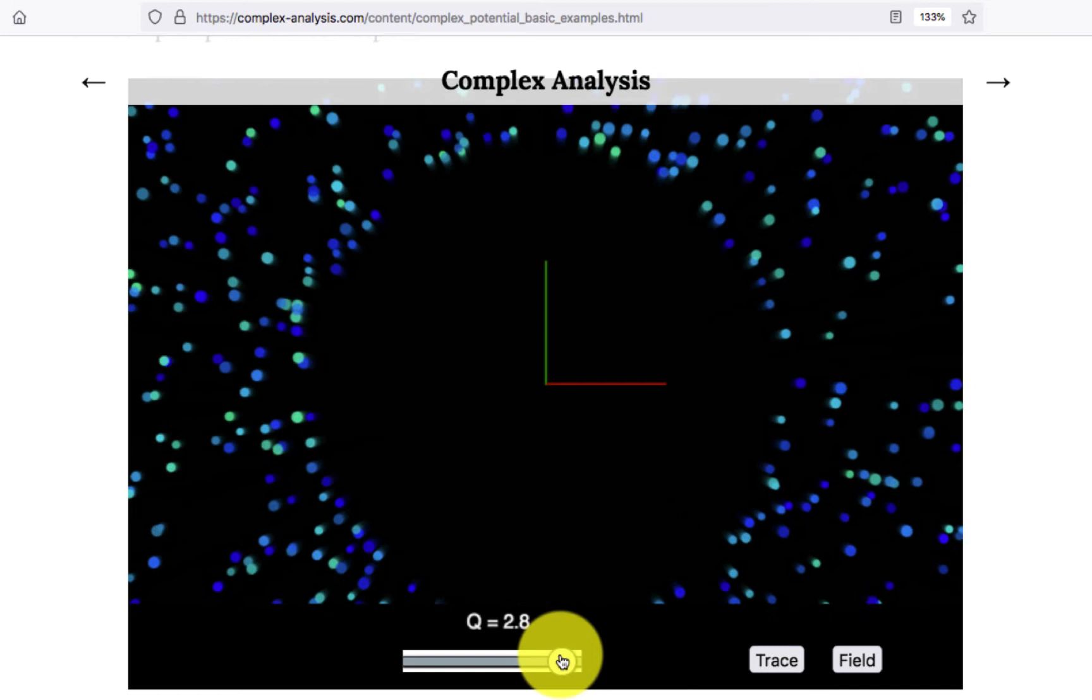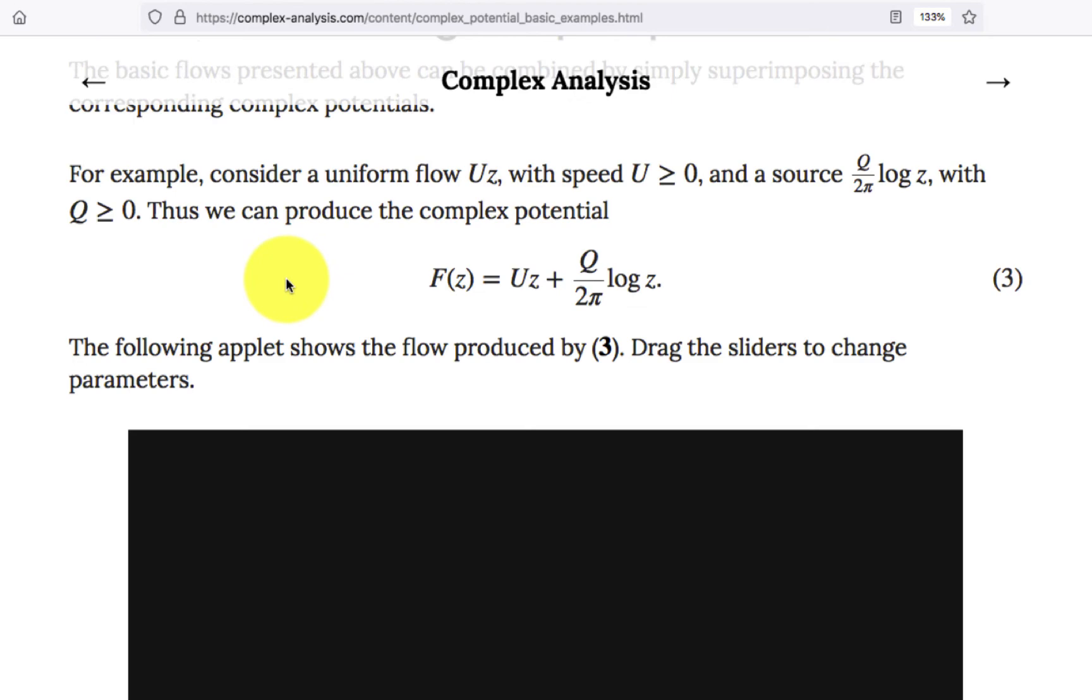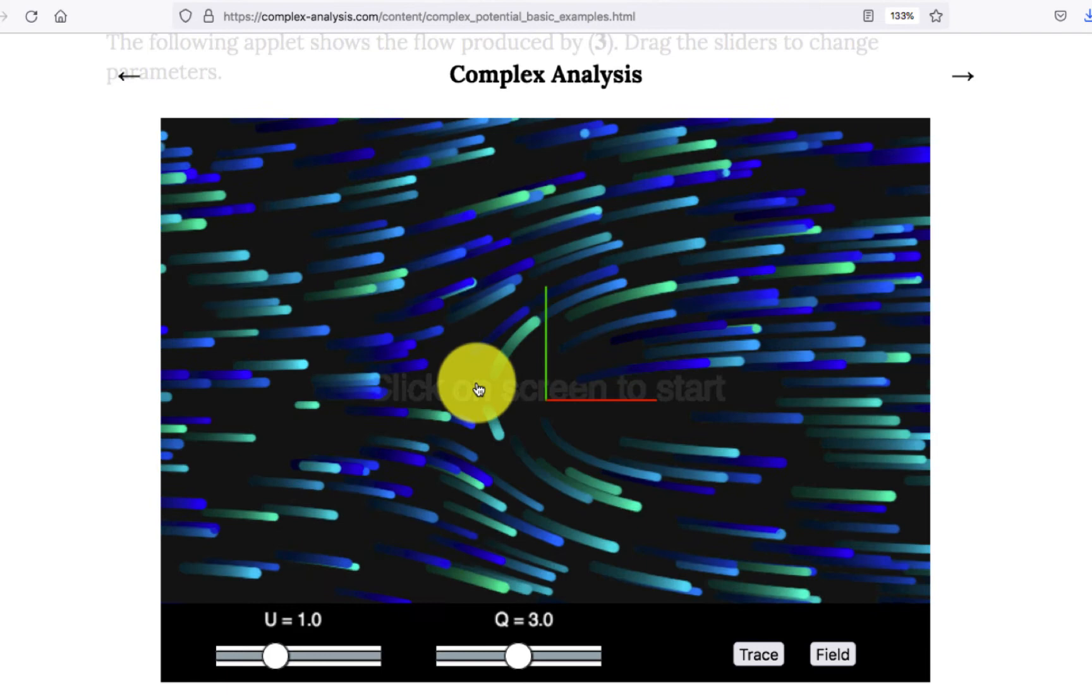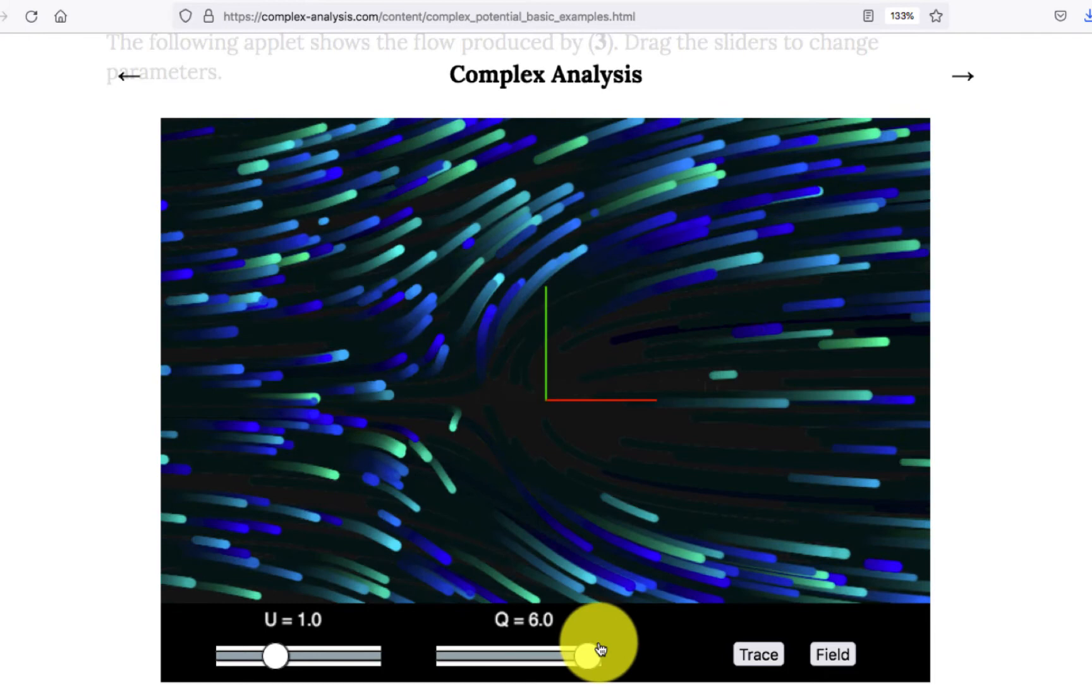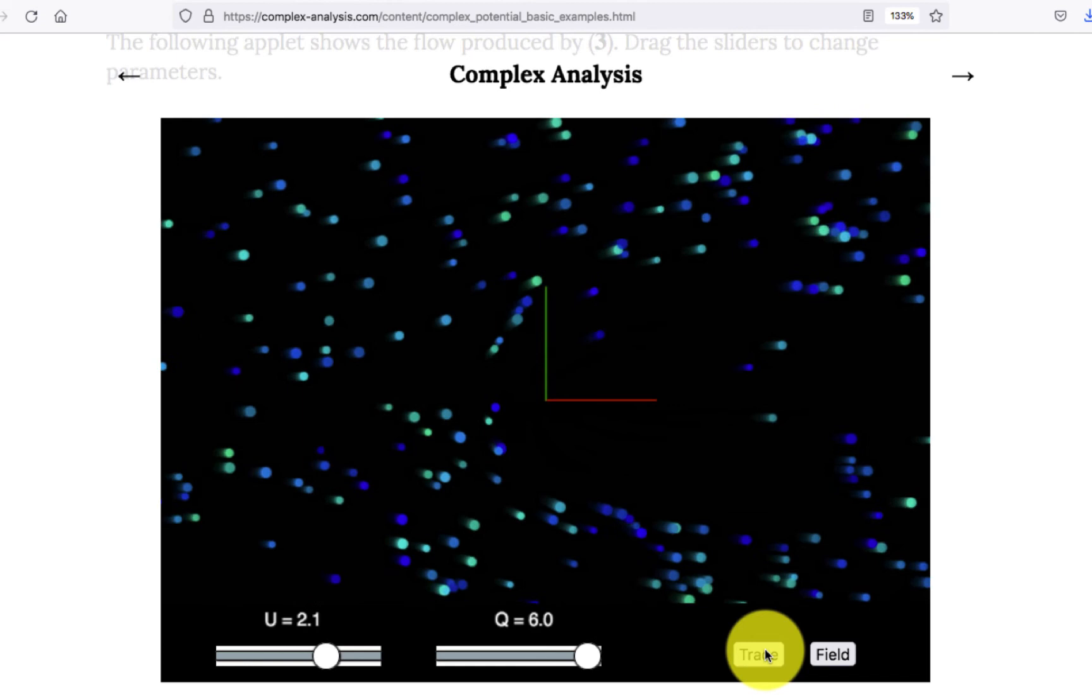So the great thing we've solved in linear differential equations is you can combine these different solutions to a more complicated solution. So this is this linear potential combined with the source. It looks like this. There's a source at zero. Stuff is coming out. We can increase more of the source. And the flow speed we can change like this. Or we can look at the particles instead, which is instructive in its own way.